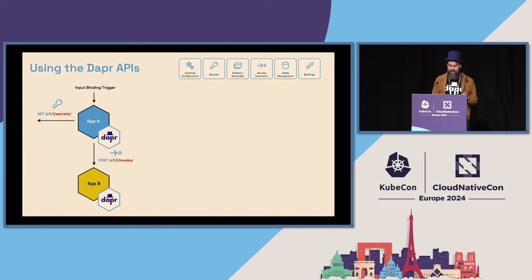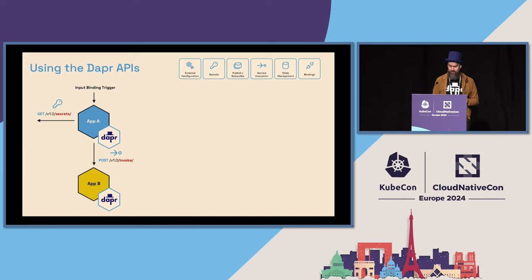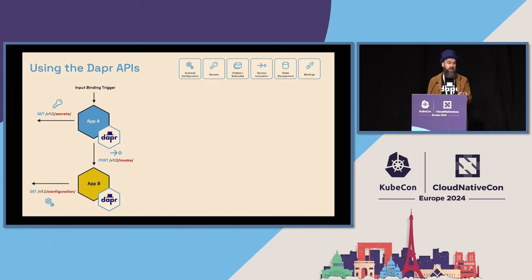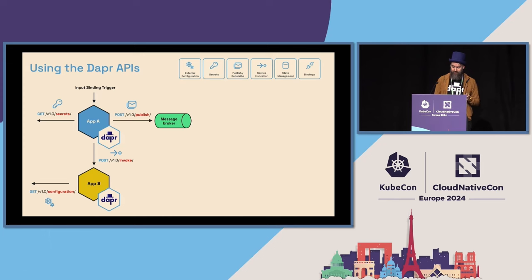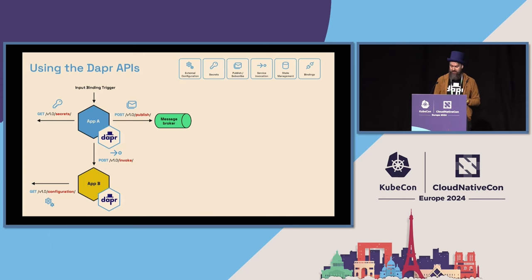Then you make a call to another application using the service-to-service invocation API. That other application uses the configuration API to read some config values, and then application A publishes a message to a topic using the publish endpoint.